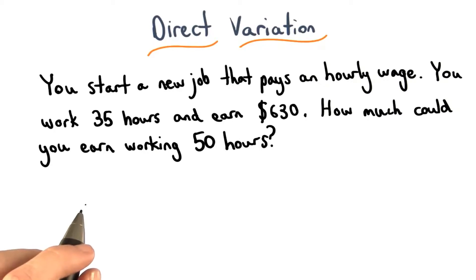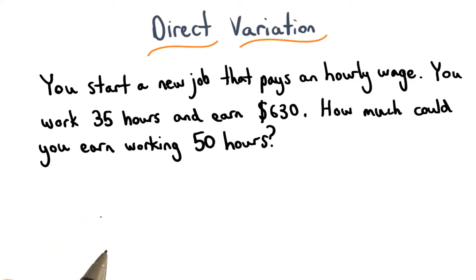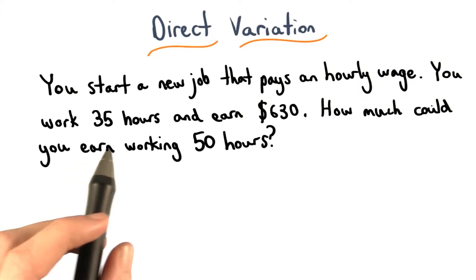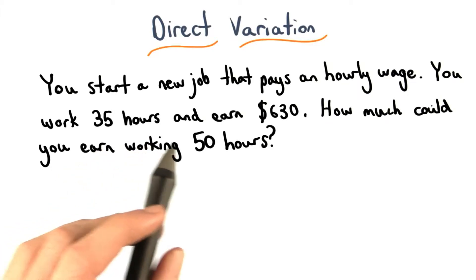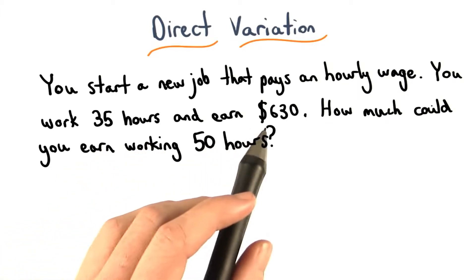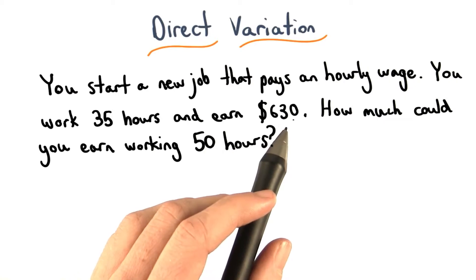In our first example, you could work 40 hours and earn $400. Let's say you start a new job that pays a different hourly wage. Now you're going to work 35 hours and earn $630.